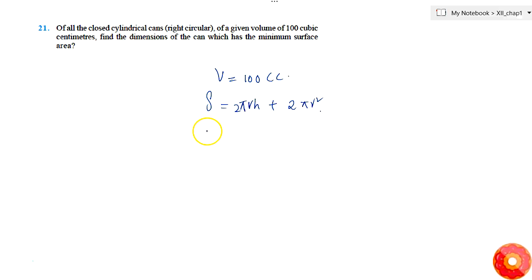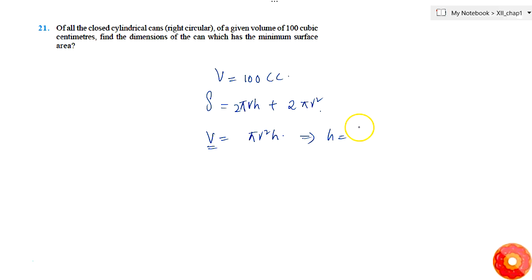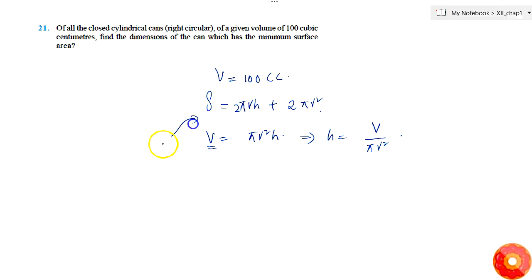We know that volume V = πr²h. Since V is constant, we can write h in terms of r: h = V/(πr²). Putting this back into the surface area formula, we get S only in terms of radius r.